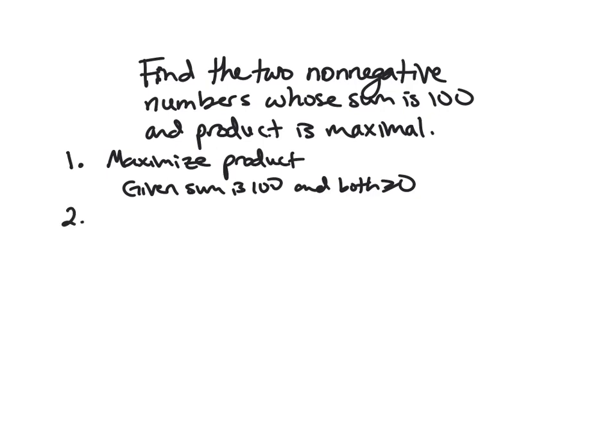So then what are the relevant equations? Well, our fundamental equation is going to be the product. That's what we want to maximize. And so in this case, the product, well, we should at least call our numbers something. I'll just use x and y. So we'll say P for product is x times y. And then we also know we have a constraint. We know what the sum is. And so 100 is x plus y because they add to 100.